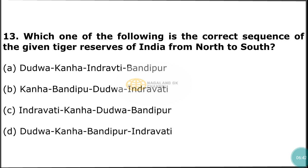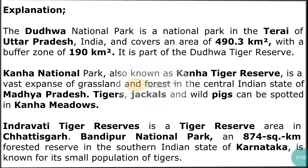Question number 13: Which one of the following is the correct sequence of the given tiger reserves of India from north to south? The correct answer is option A — Dudwa, Kanha, Indravati, and Bandipur. Dudwa National Park governs an area of 490.3 km² with a buffer zone of 190 km², and is part of the Terai Tiger Reserve. Kanha National Park, also known as Kanha Tiger Reserve, is a vast expanse of grassland forest in Madhya Pradesh. Indravati Tiger Reserve is located in Chhattisgarh. Bandipur National Park, at 874 km², is in Karnataka and known for its small population of tigers.